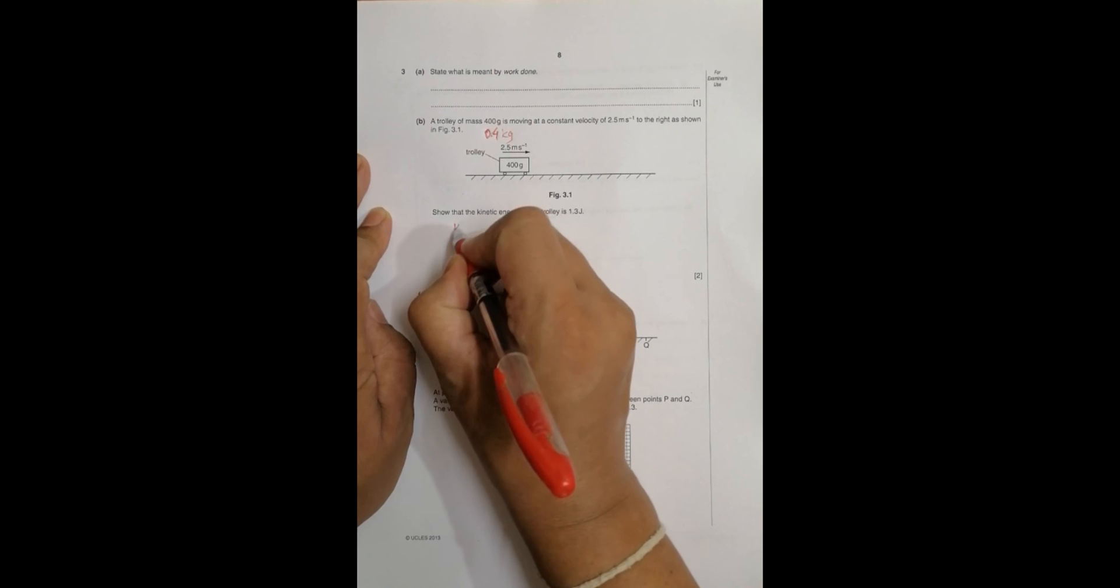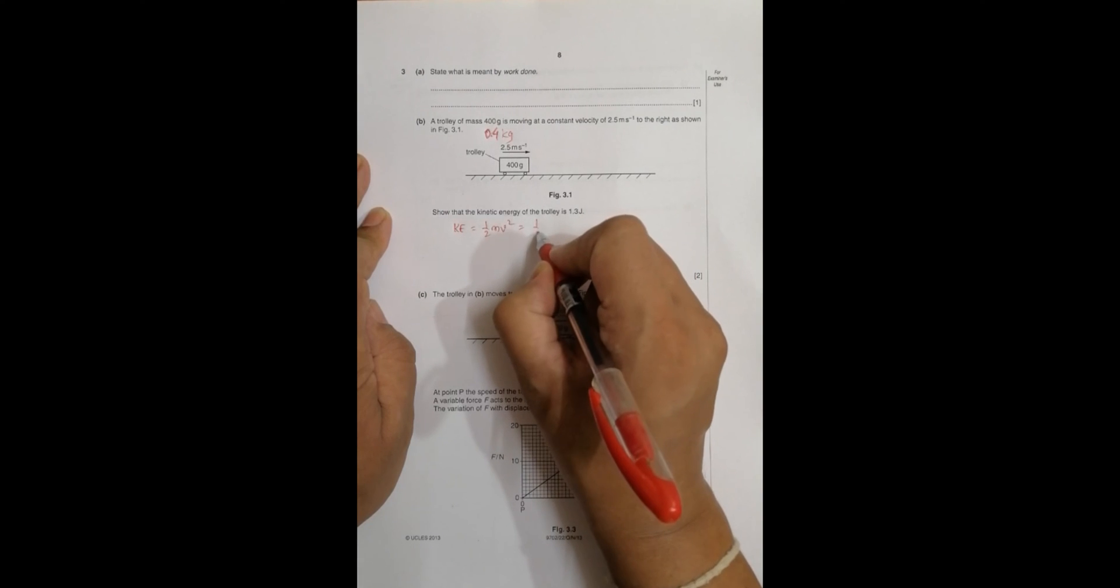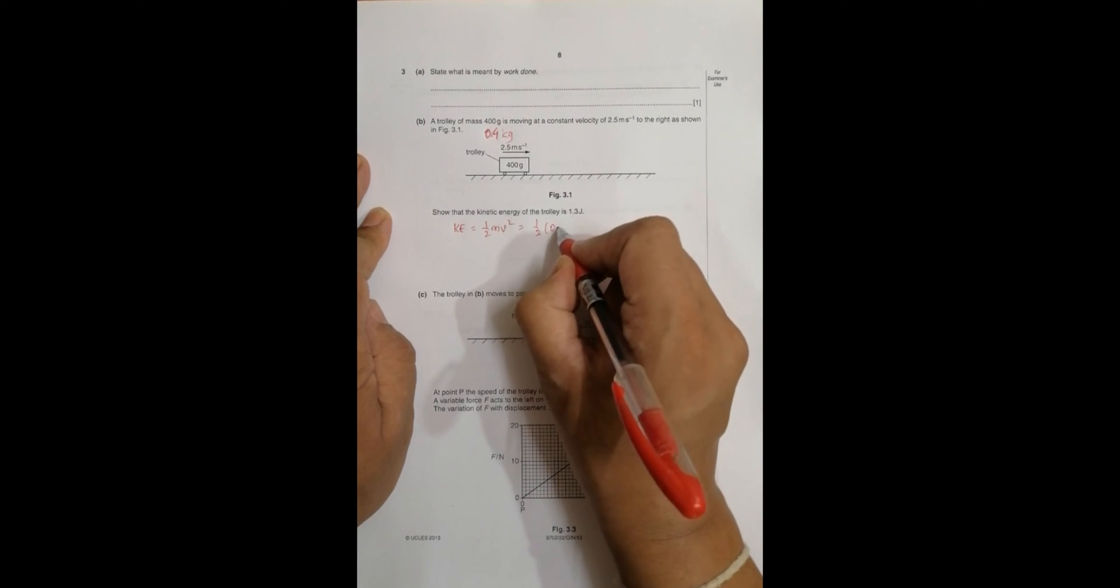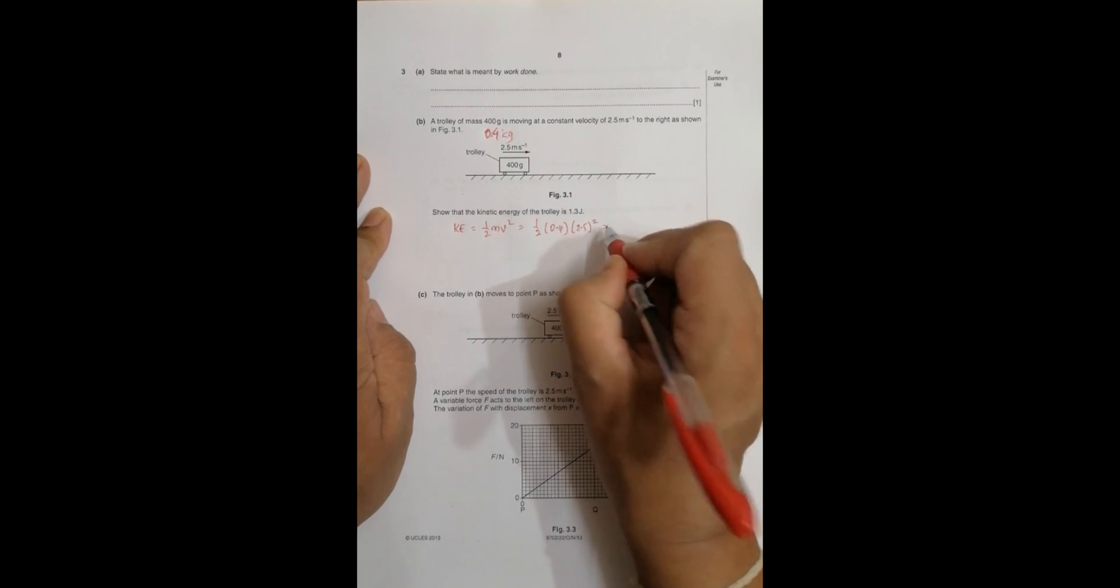The first one is easier. The kinetic energy should be equal to 1/2 mv squared, equal to 1/2 times 0.4 times 2.5 squared. So it will be equal to 1/2 times 0.4 times 2.5 squared.